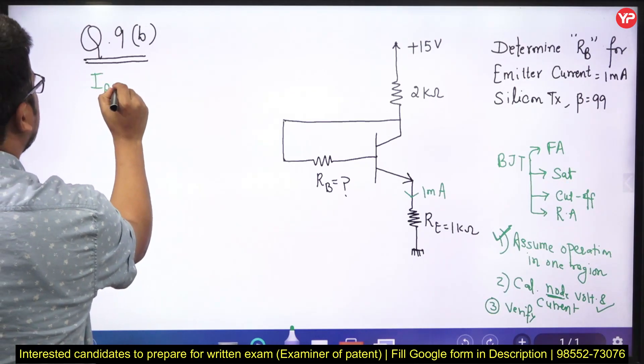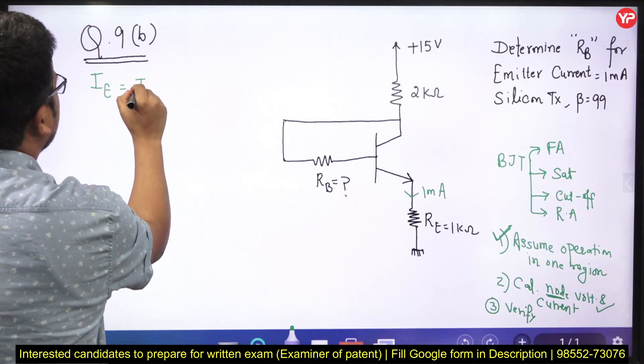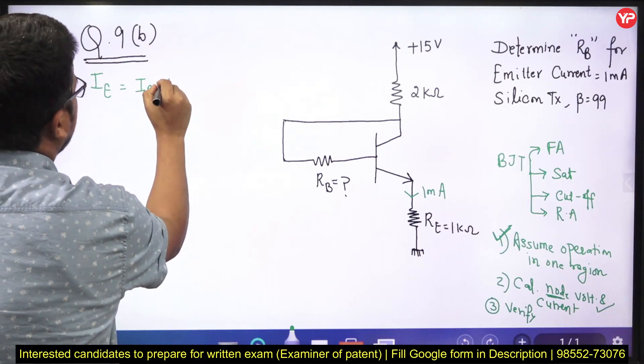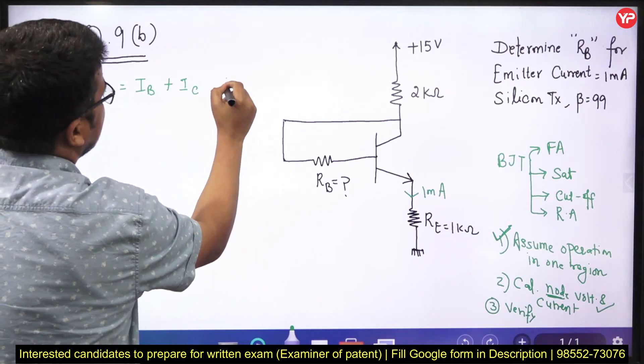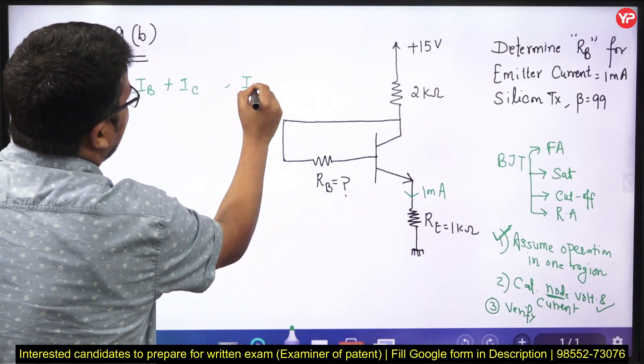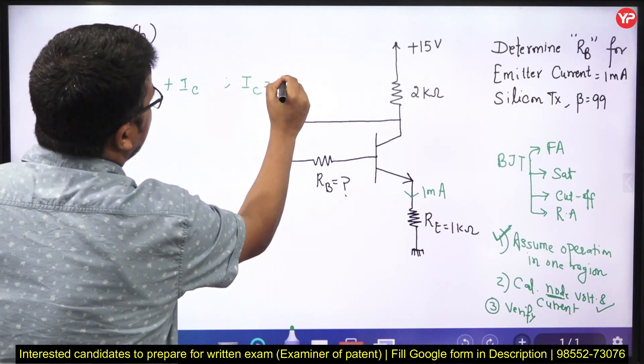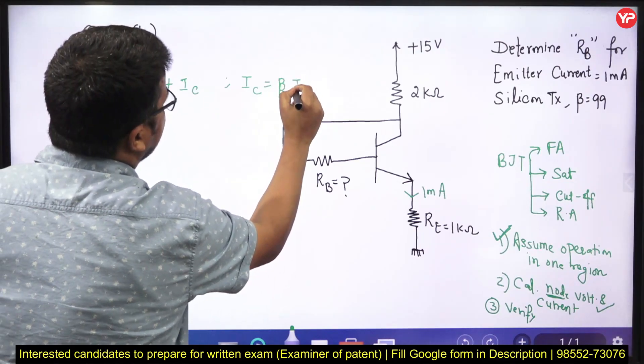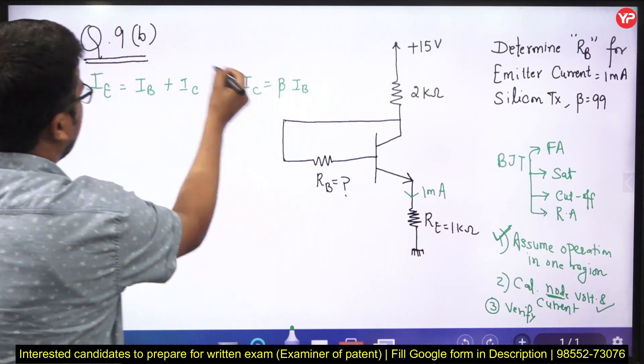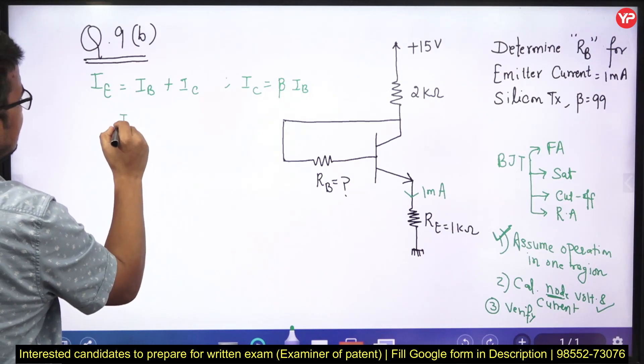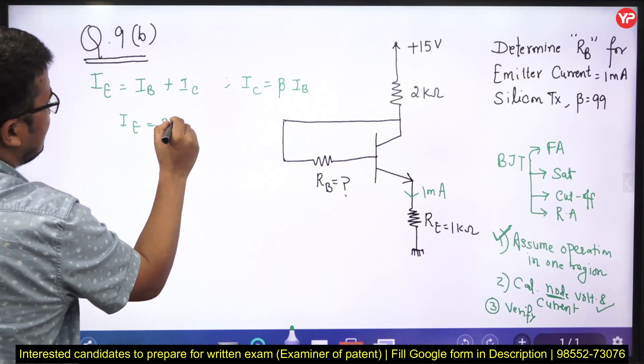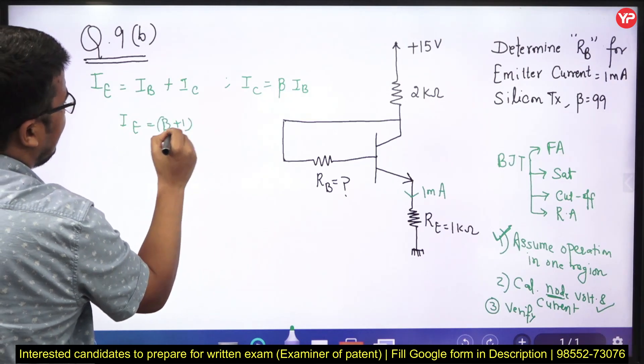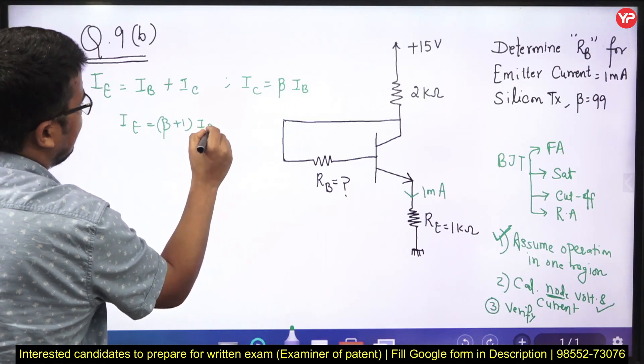Emitter current is equal to base current plus collector current. You also know the relation, collector current can be written in term of base current, beta IB. And it means if you put it here, IE can be written in terms of beta plus 1 and then IB. These are some fundamental relations.